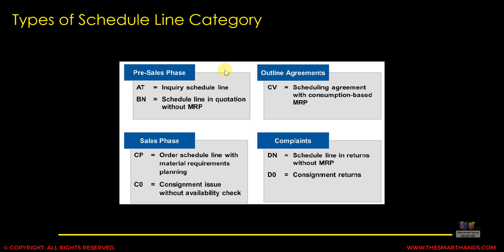Depending on the different document types in sales, different item categories will have different schedule line categories linked. For example, for a pre-sales document like an inquiry, AT is the schedule line category; BN is for quotation; CP is for a standard sales order; C0 is for consignment issue without availability check; CV is determined for outline agreements; and D and D0 are different schedule line categories for complaints documents like returns.